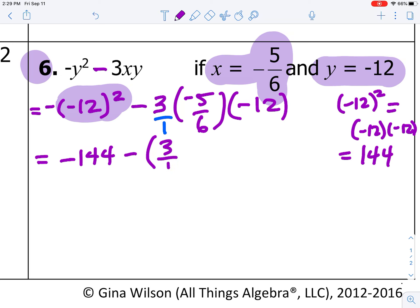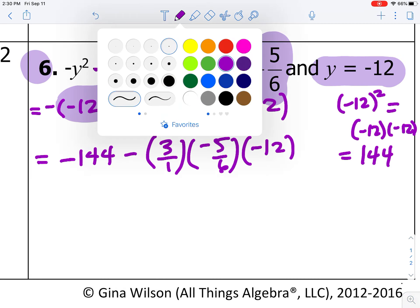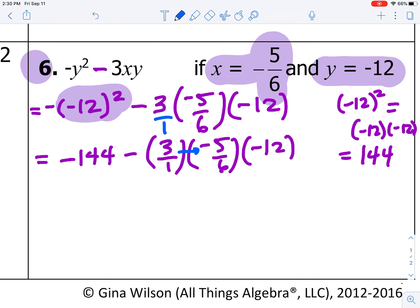So, I'm going to copy down the minus sign. I'm going to copy down the 3 over 1. I'm going to copy down the negative 5 over 6. And, I'm going to copy down the negative 12. And, remember, we're multiplying these fractions straight across. So, negative 144 minus 3 times negative 5 is negative 15. 1 times 6 is 6.